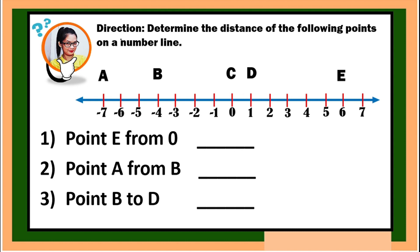Now let us have another activity. From the given direction, determine the distance of the following points on a number line. So it is not just the location but the distance that we are going to find. For number one, point E from zero — we start from zero until we reach point E: one, two, three, four, five, six. The answer is six units.